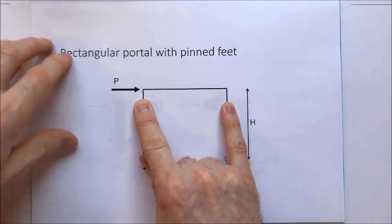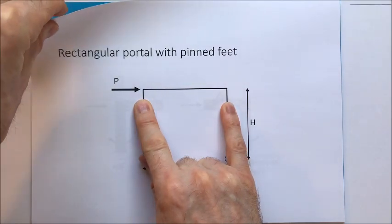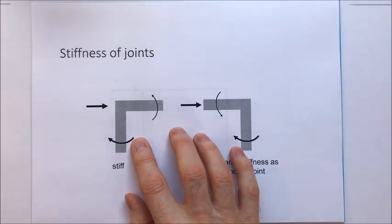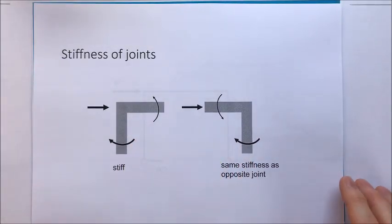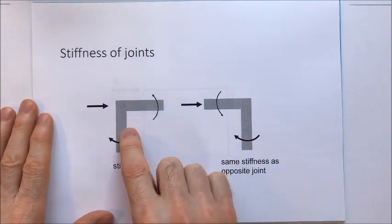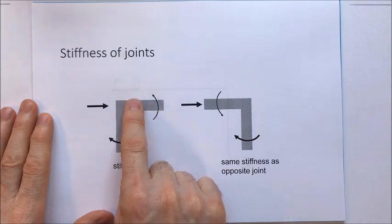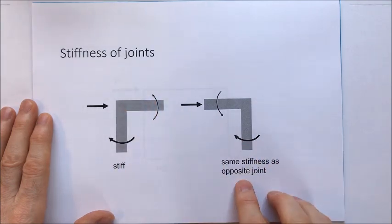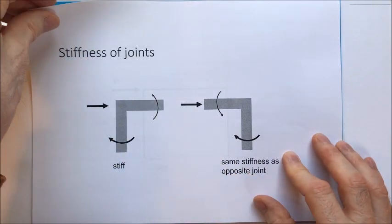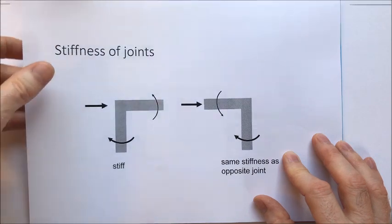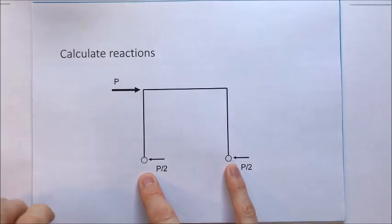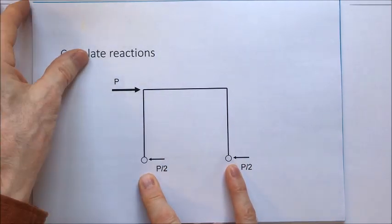To consider how stiff each connection is at the tops of the legs, we need to consider what they're fixed to. The left-hand leg is connected to just one beam on its right-hand side, and the right-hand leg is connected to one beam on its left-hand side. So the joints are equally stiff — equal stiffness means equal moments and equal reactions at the base of the legs. A horizontal force of P leads to reactions of P over 2.